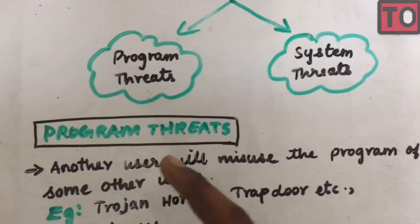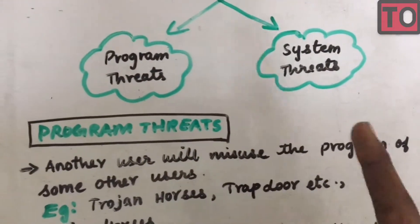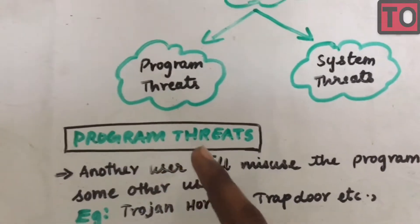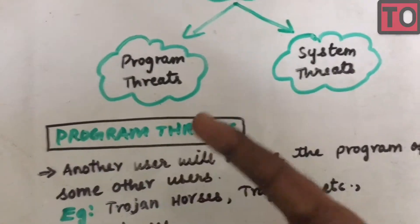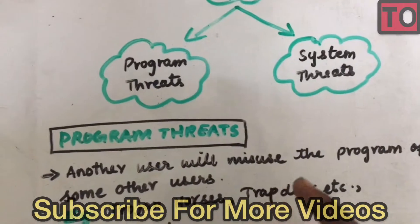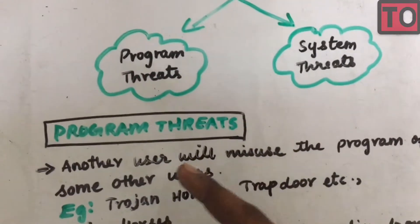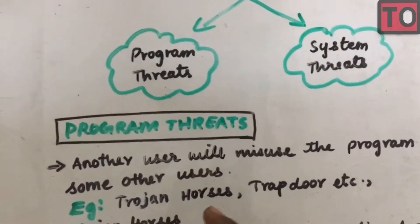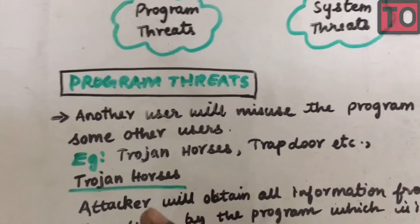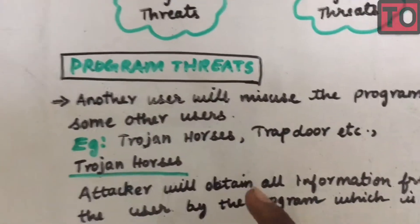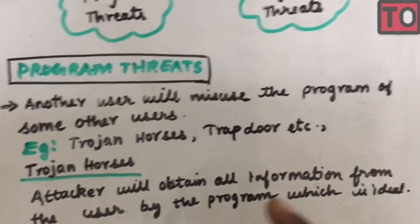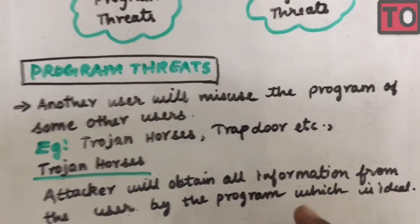Another user will misuse the program of some other user — this is program threats. For example, with Trojan Horses, you will find an anonymous user. The attacker will obtain all information from the user by a program which is idle.